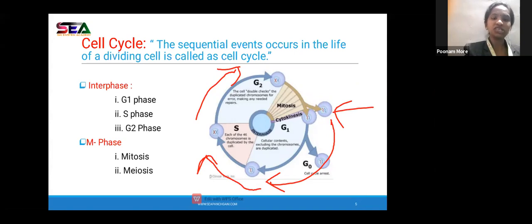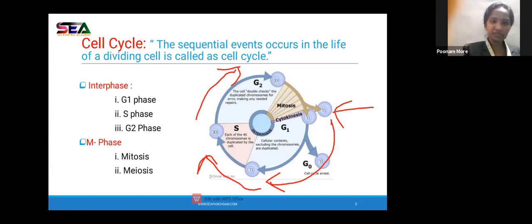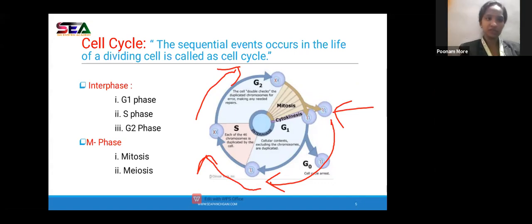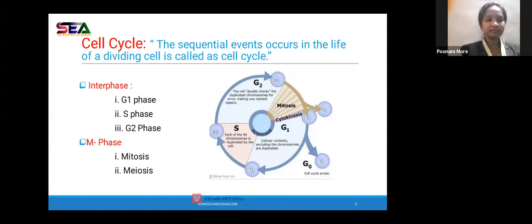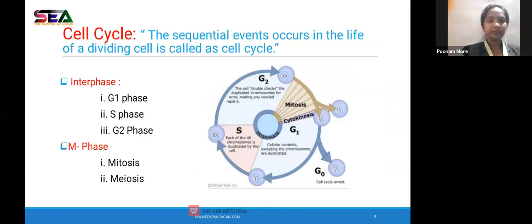After interphase, the cell enters the M phase — the second main phase — which shows dramatic changes. The M phase is divided into two sub-phases: mitosis and meiosis. Along with mitosis and meiosis, M phase also includes cytokinesis. Let's now study the next point: cell division.